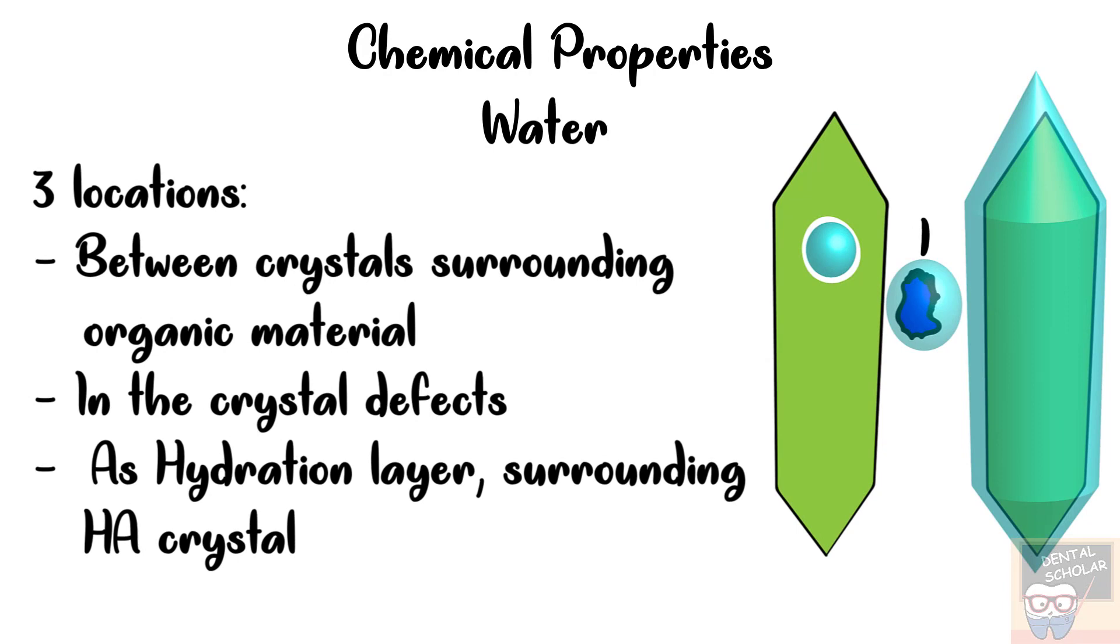Water in enamel is found in three locations. First between crystals surrounding organic material. Second, it is found in the defects within the hydroxyapatite crystals. And third, as hydration layer surrounding the hydroxyapatite crystals. So these are the three locations where water is found in enamel.